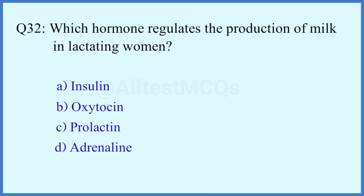Question number 32. Which hormones regulate the production of milk in lactating women? The right answer is option C: Prolactin.